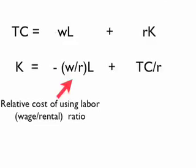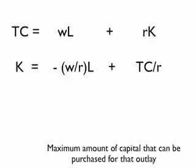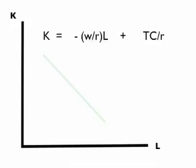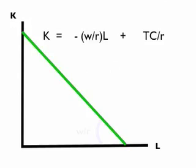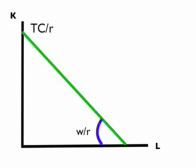The wage-rental ratio will play an important part in many of the later aspects of what we do. The y-intercept is the total cost of outlays divided by the return to capital — that is, the maximum amount of capital that can be purchased for that given level of total outlay by the firm. Graphically, the green line represents this equation, where the slope is the wage-rental ratio, the y-intercept is the total amount of capital that can be purchased, and the x-intercept is the total amount of labor that can be purchased for the same level of cost.